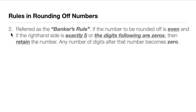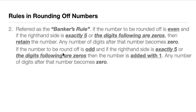Rule number 3 is referred to as the banker's rule. If the number to be rounded off is even and the right-hand digit is exactly 5 — meaning there is no digit after the 5, or all digits following it are zeros — then retain that number, and all digits after it become 0. However, if the number to be rounded off is odd — 1, 3, 5, 7, or 9 — and the right-hand side is exactly 5, then the digit is added with 1.